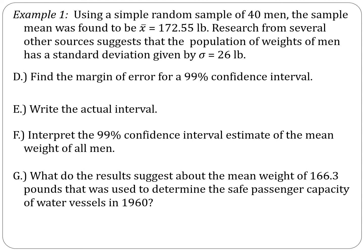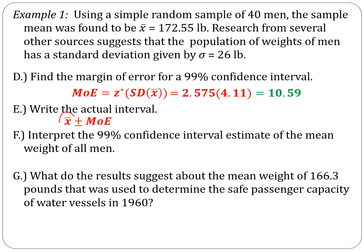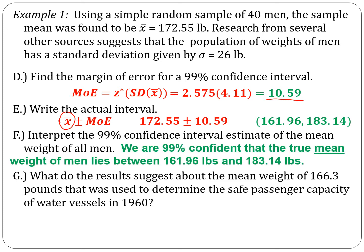Margin of error is the Z-score times our standard deviation. In this case, it's 2.575 times 4.11. Our margin of error is 10.59 pounds. The interval always starts with our point estimate — in this case the sample mean — and we add and subtract the margin of error. So 172.55 plus or minus 10.59 gives us this interval. We are 99% confident that the true mean weight of men lies between 161.96 pounds and 183.14 pounds.